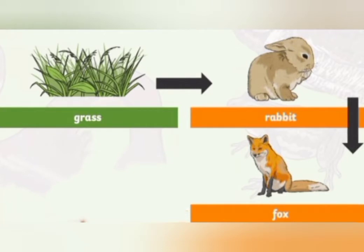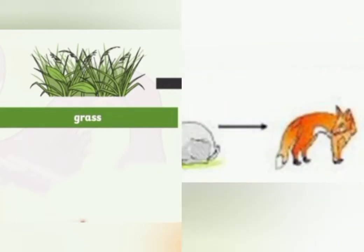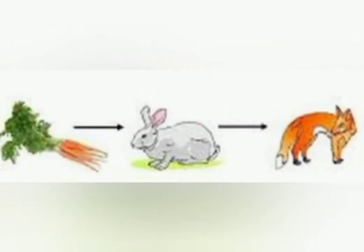In this example, we can see grass. Grass is a producer and it is eaten by a rabbit, which is a primary consumer. The rabbit is hunted by a fox, which is a carnivorous animal and a secondary consumer.